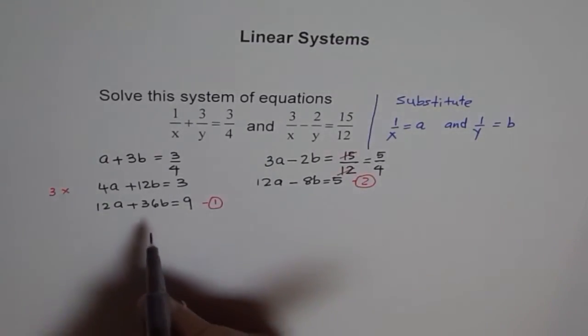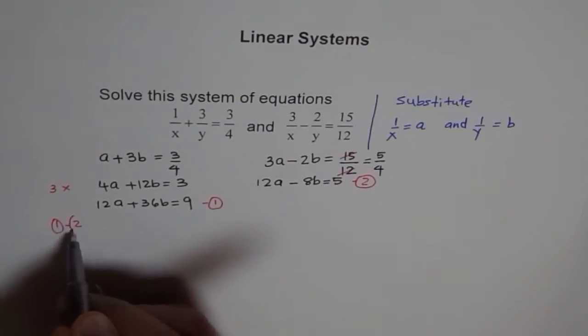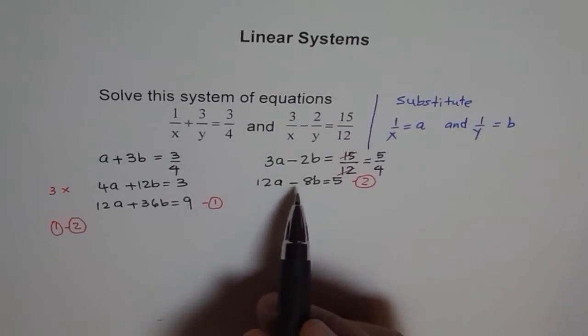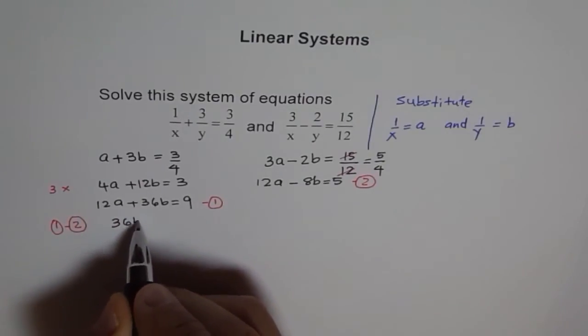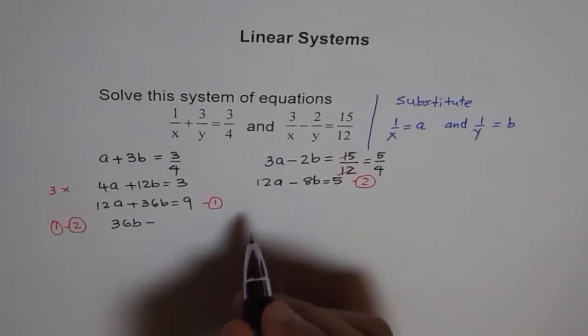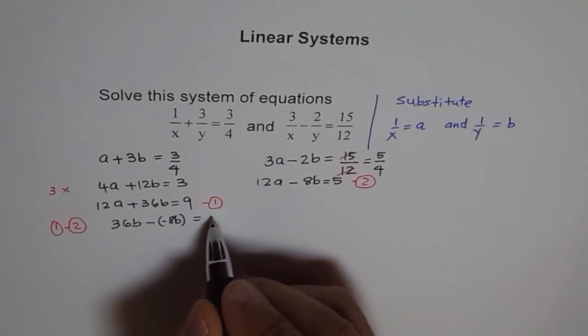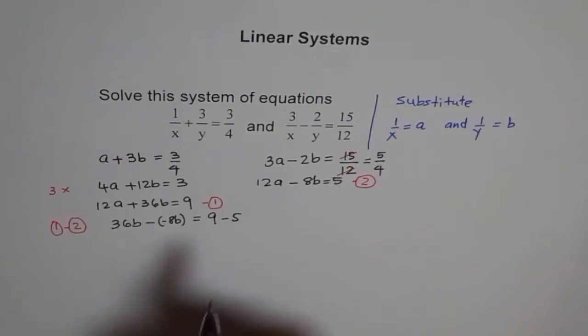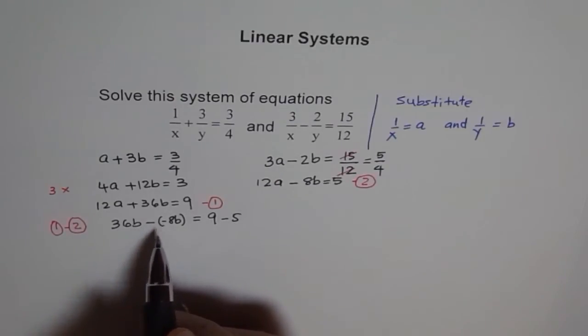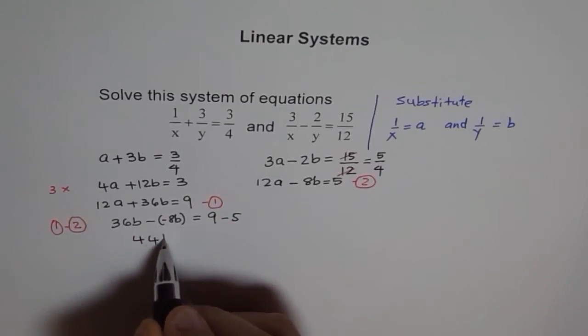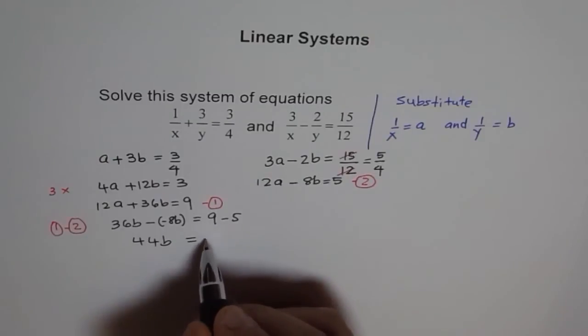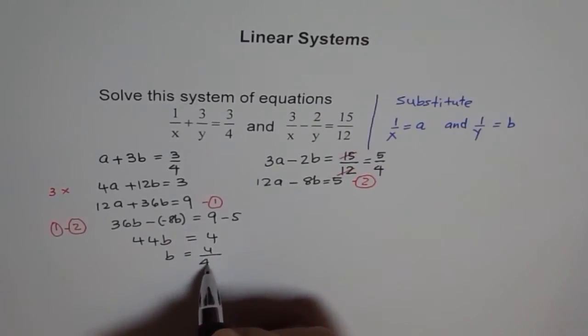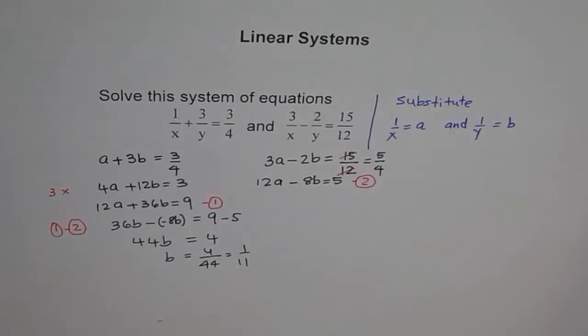Now we'll do 1 minus 2. So 12A minus 12A is 0. And 36B minus minus 8B equals 9 minus 5. So 36 minus minus becomes plus. So it becomes 36 plus 8, which makes it 44B equals 4. Therefore B equals 4 over 44, which is 1 over 11.